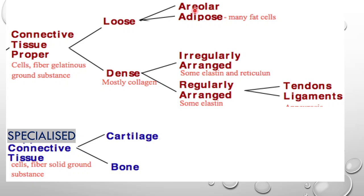Areolar tissue is found just below the compound epithelium, that is the skin. If you recall from the previous lecture, just below the skin is present the areolar tissue, and adipose tissue lies further below it, inner to the epithelial tissues, which includes many fat cells. These two are categorized as loose connective tissue because the cells are arranged in a semi-fluid ground substance.